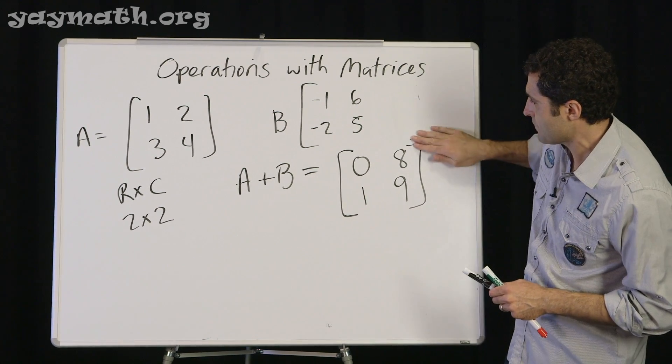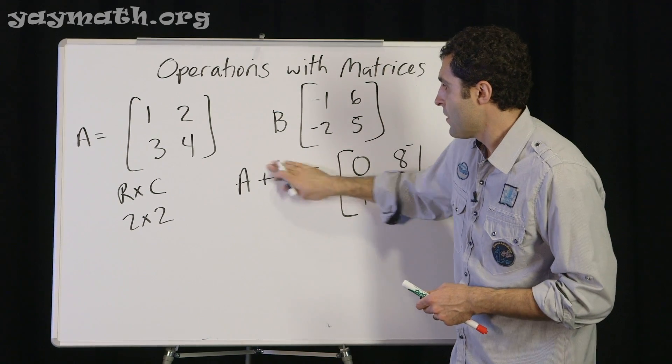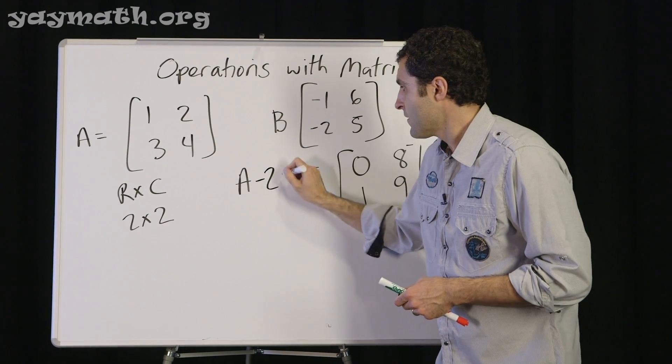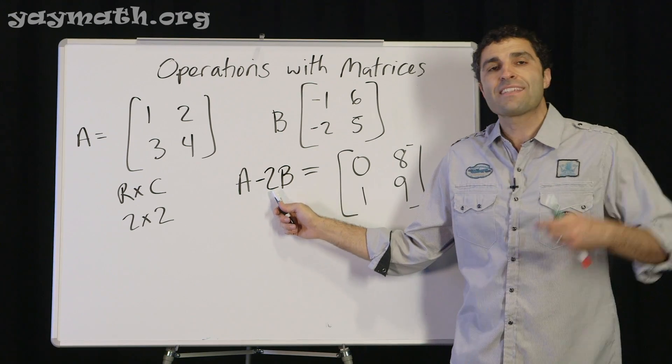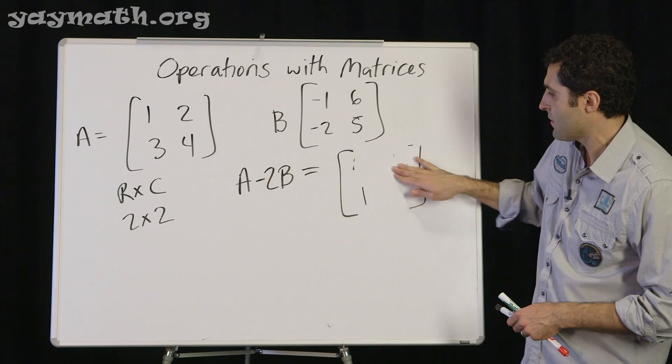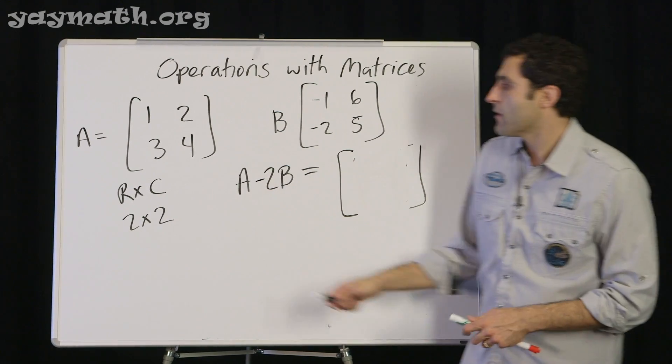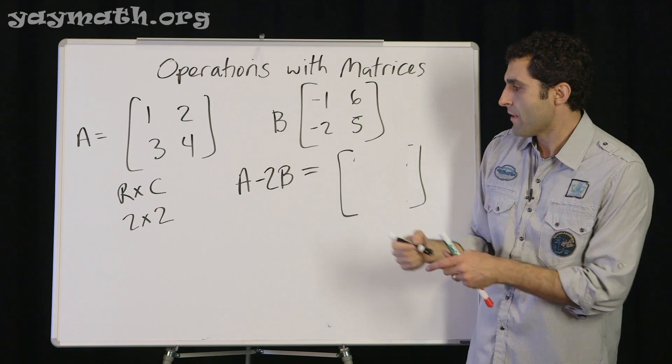But what we can do is we can do other operations. We can go like, something like that. That works. This is called a scalar. You know, you scale the matrix up or down. Let's see what that would look like. A minus two times this.